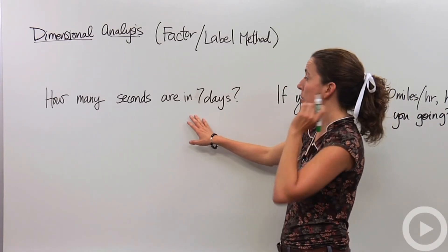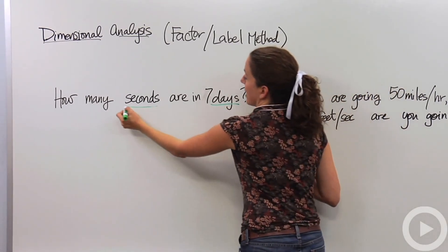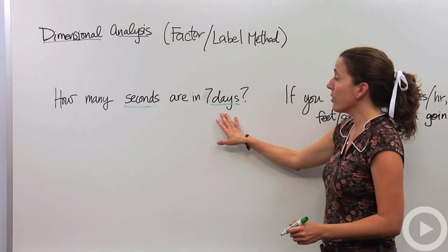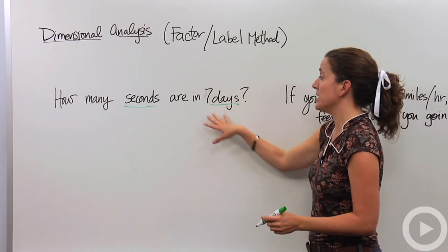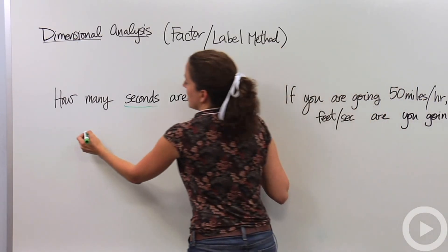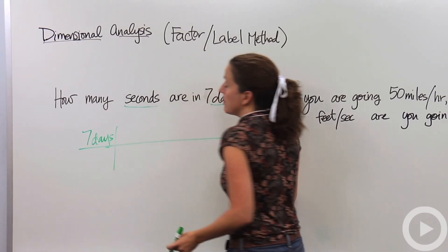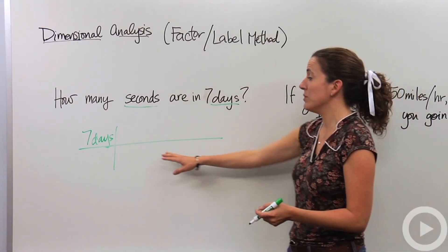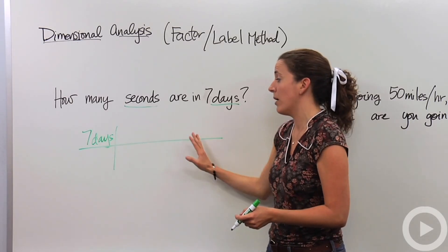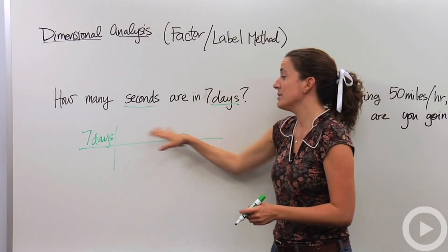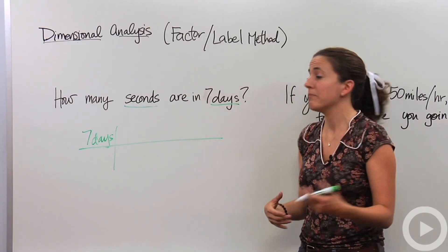So the first thing you're going to do when you're converting from one unit to another, in this case, seven days to seconds, we are going to start off with our given. In our given, in this case, we're given seven days. So we're going to write that down, seven days. Then we're going to write what we call, some teachers call it a picket fence. And this is actually used and it's quite easy when you're converting from one thing to another. This method is just the easiest way to organize your data.